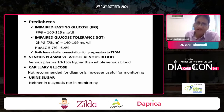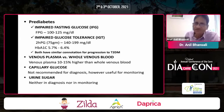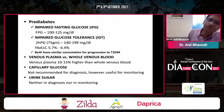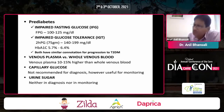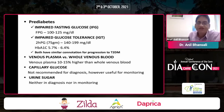Prediabetes: IFG and IGT are defined by fasting values of 100 to 125 and two-hour values of 140 to 199 respectively, and hemoglobin A1c between 5.7 to 6.4 percent. Both IFG and IGT have similar connotations for progression to type 2 diabetes.